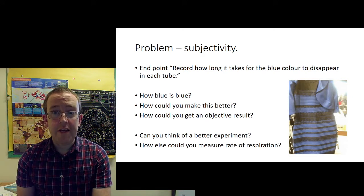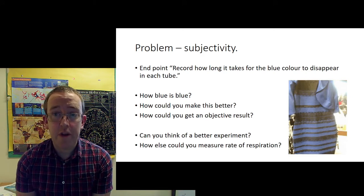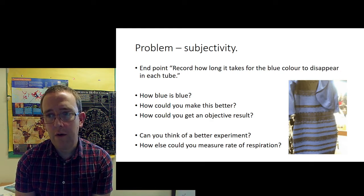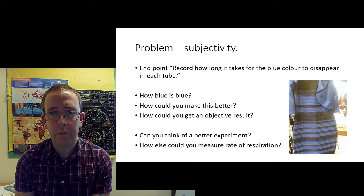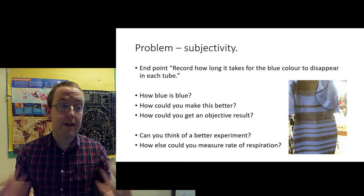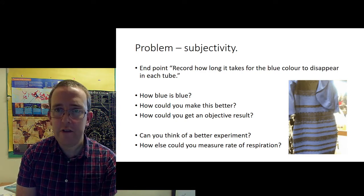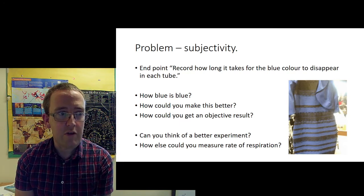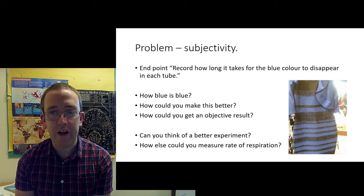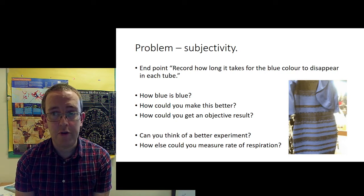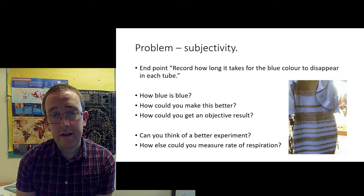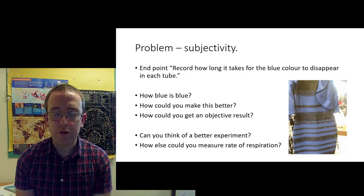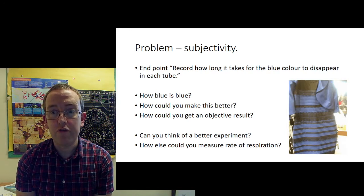I just want to finish this one by saying there's a massive problem here in terms of subjectivity. Now, the method specifically says the endpoint, record how long it takes for the blue colour to disappear in each tube. Sounds straightforward, but, of course, as you know by now as year 13 scientists, that obviously is potentially something that you could be differing about. So, how blue is blue? How much does the blue have to disappear? How could you make this actually better? Think about colour standards, think about what you would compare this end result to.